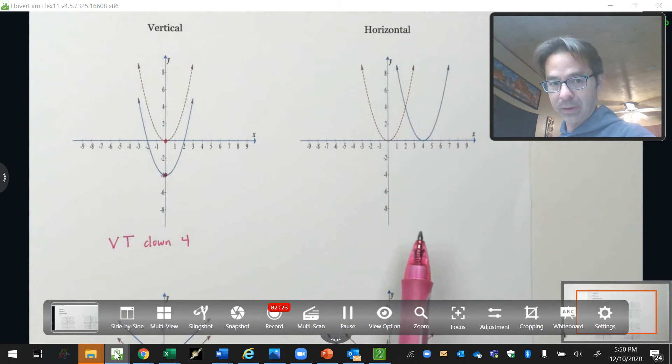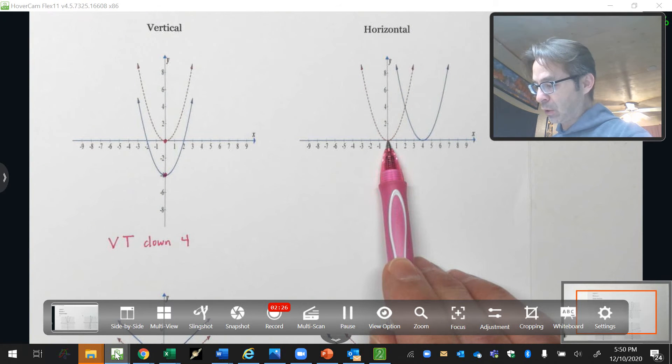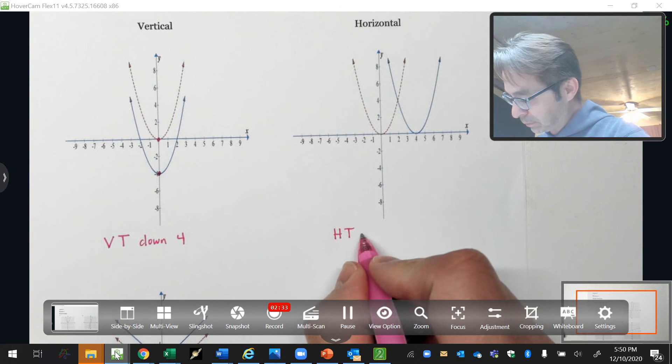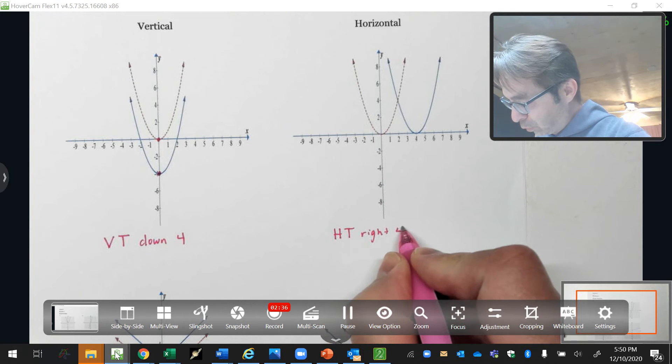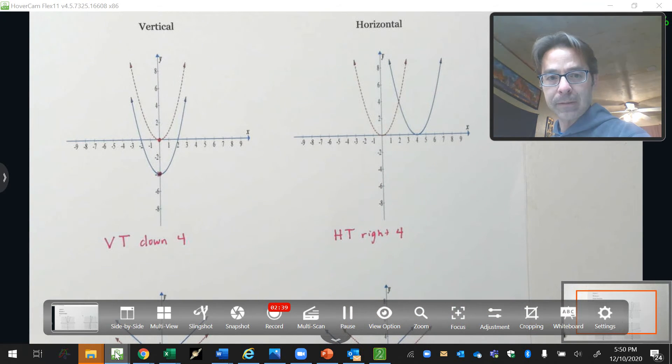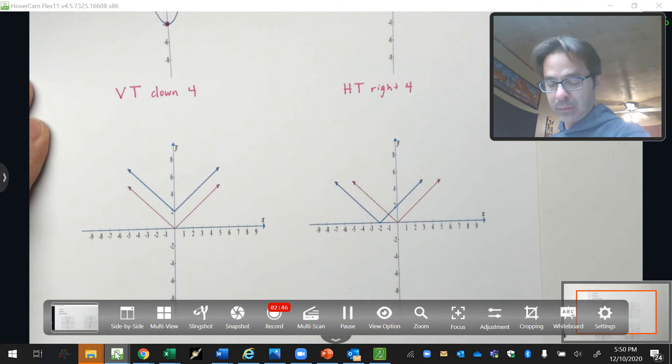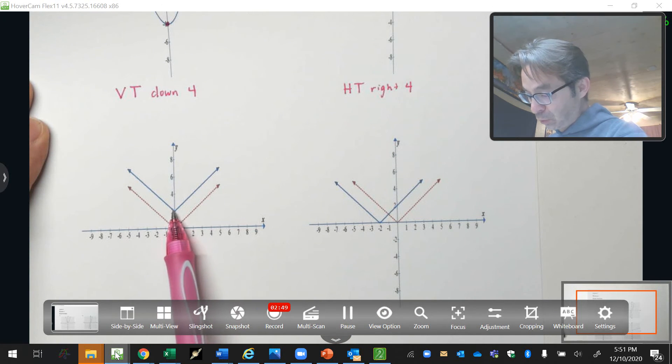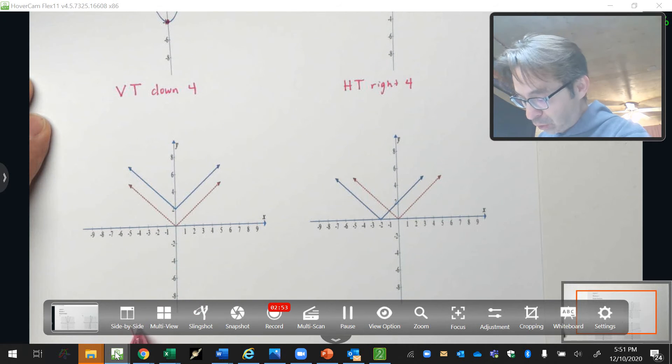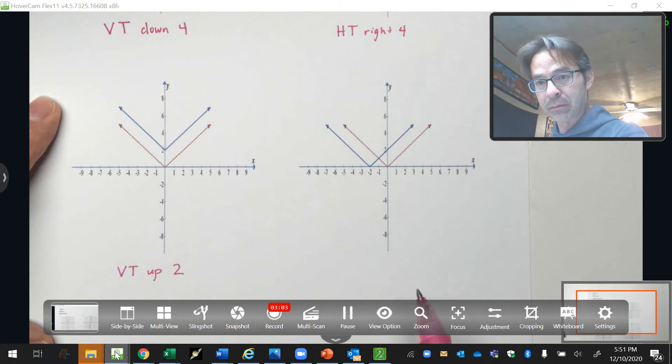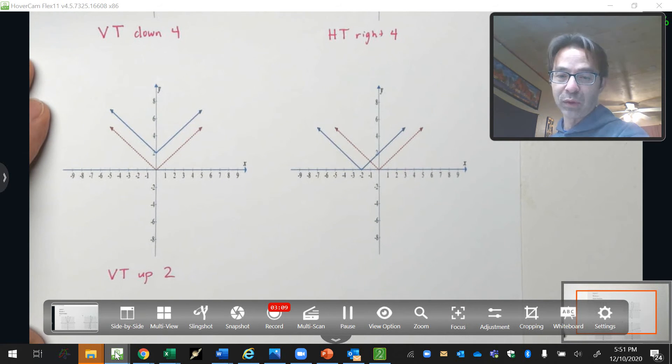Let's go ahead and do the easy part which is describing what happened. This one is horizontal translation. Horizontal translation to the right. Vertical translation up two spaces. Vertical means up and down. Horizontal is left and right. Those are two terms you must know, unfortunately. That's just the way it is.